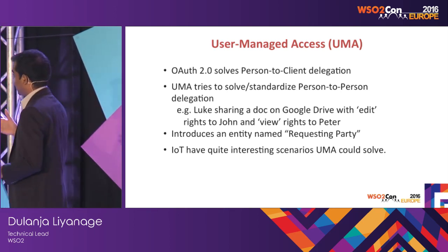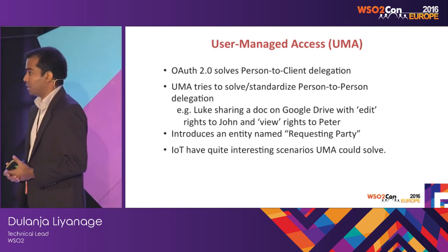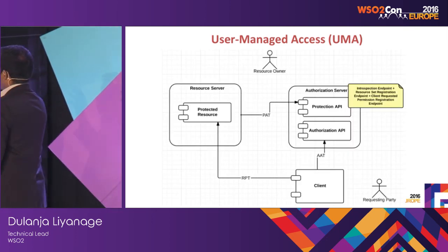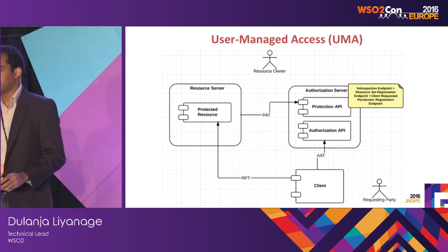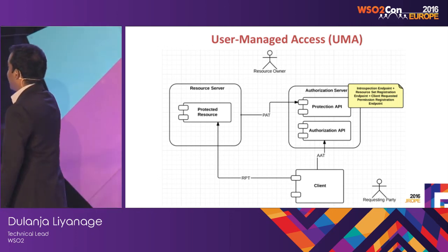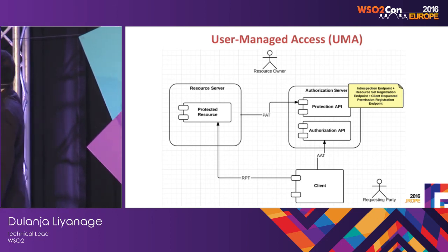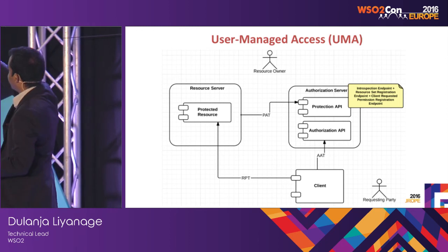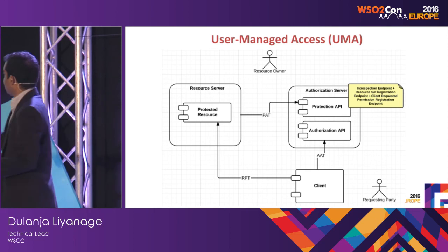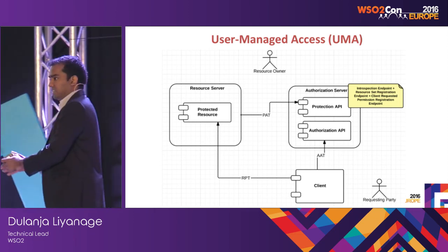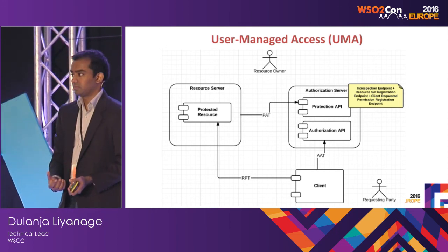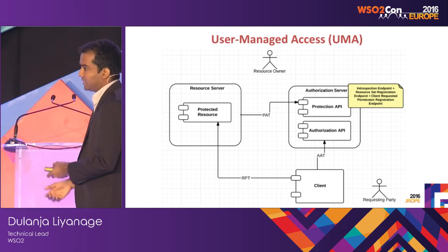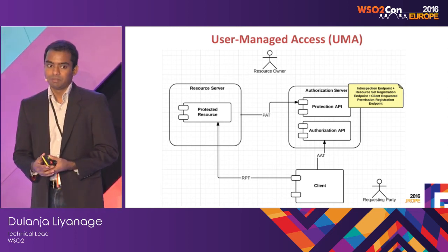UMA is particularly interesting in IoT, where IoT devices are everywhere and this can create a lot of use cases. UMA is based on OAuth — it's a solution that tries to solve something OAuth itself couldn't. Several APIs are introduced: protection API, authorization API, and several tokens — protection API token, authorization API token, and requesting party token. The concepts of resource server, authorization server, and client are all the same, with the additional concept of a requesting party — another person asking to have access delegated to them. We have already developed a UMA implementation as a Google Summer of Code project and it will be included in a future release.